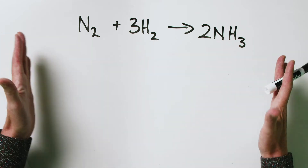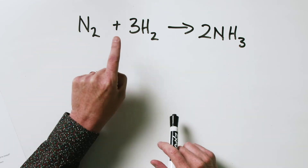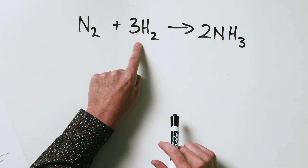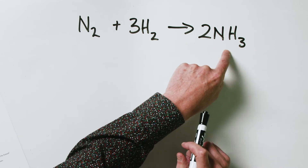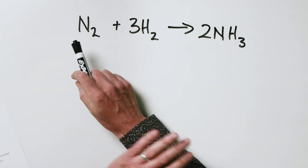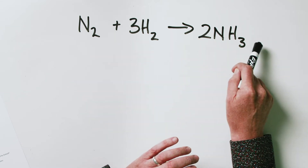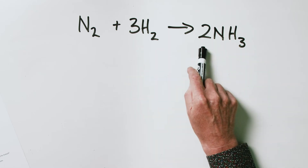Let's assume this reaction proceeds to completion — in actual fact it doesn't, but we'll assume it does. Therefore if we had one mole of nitrogen, it would react completely with three moles of hydrogen, and at the end of the reaction we would have two moles of ammonia. We can see that straight away from the stoichiometric coefficients — the numbers that come before our reactants and products in the balanced chemical equation.